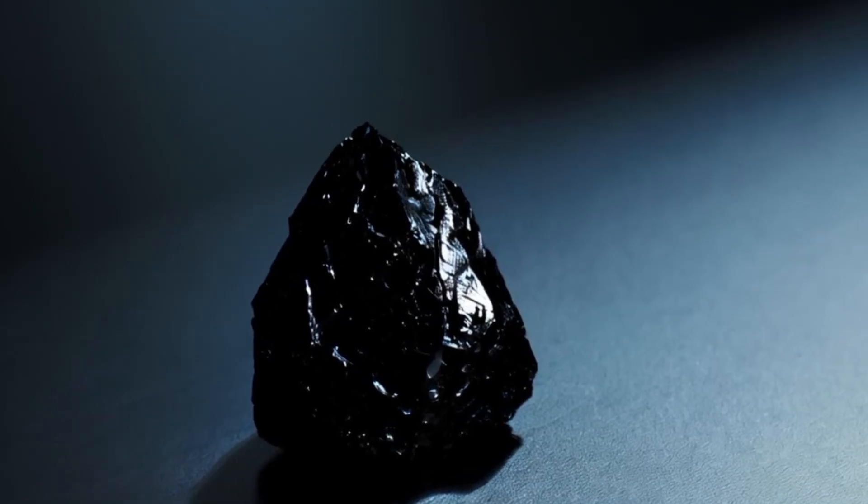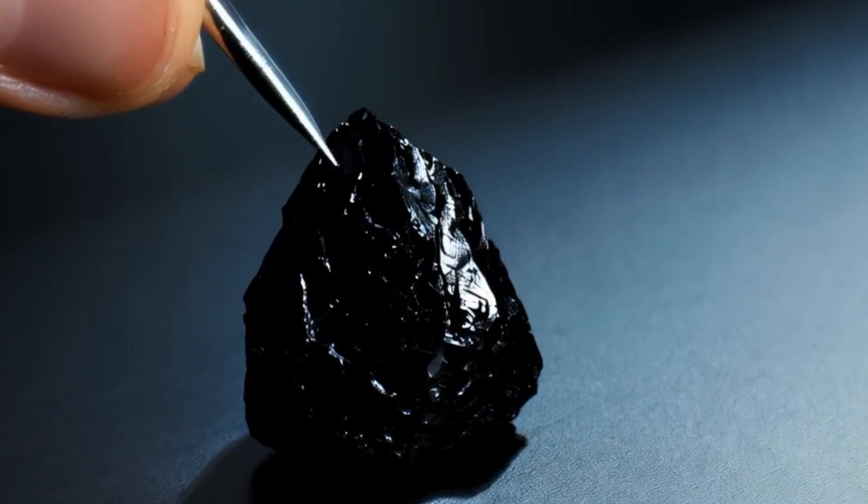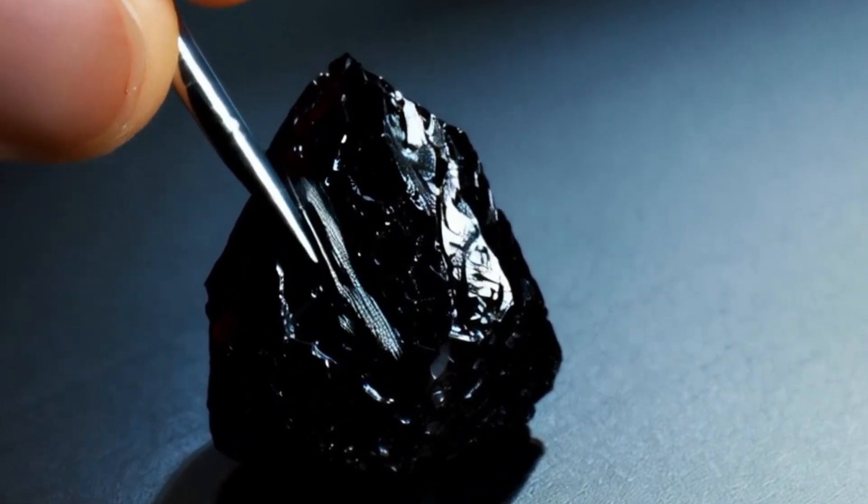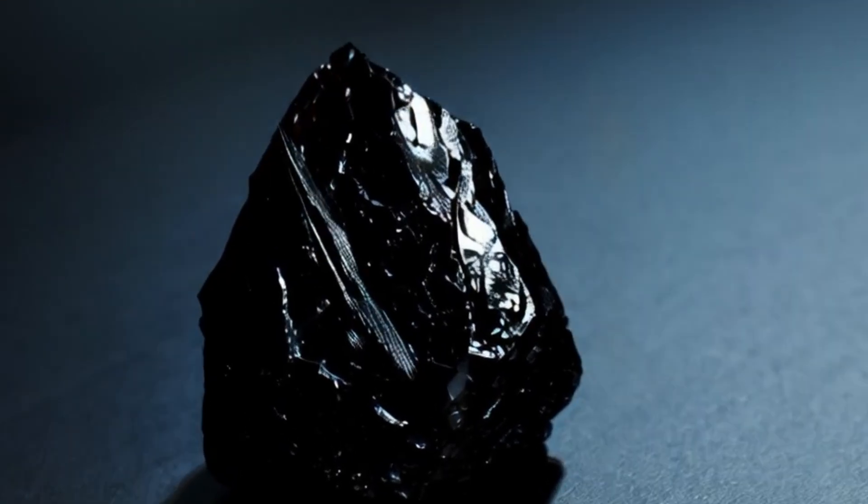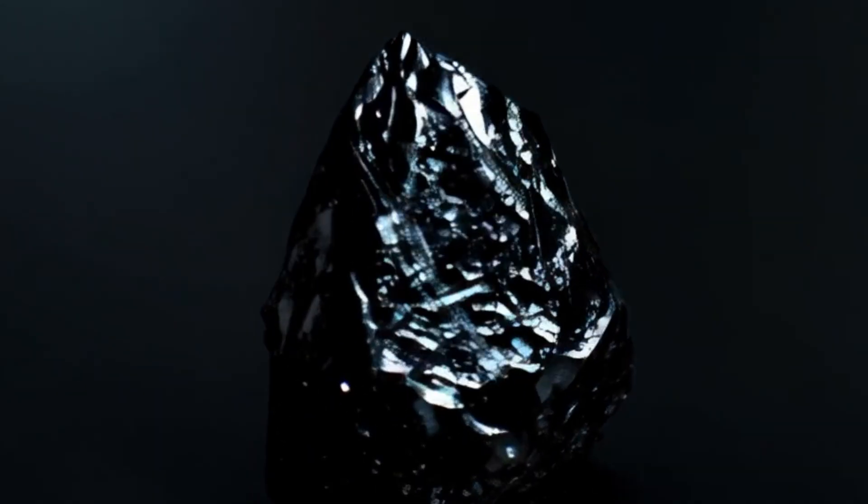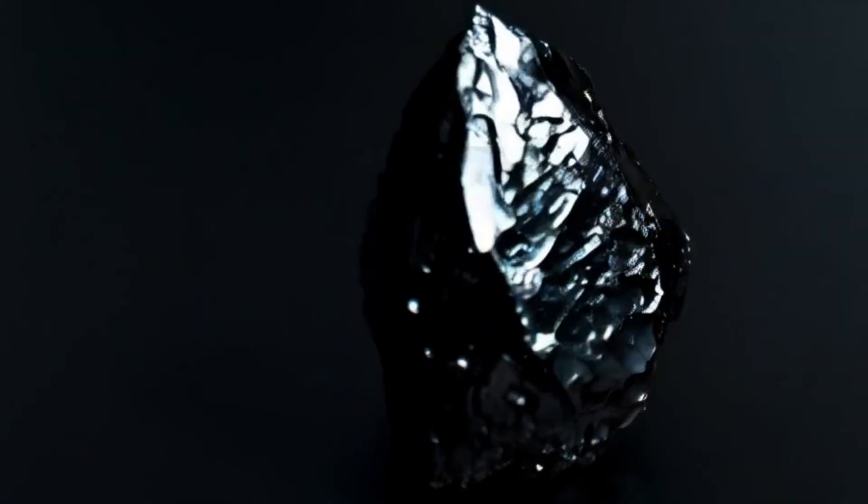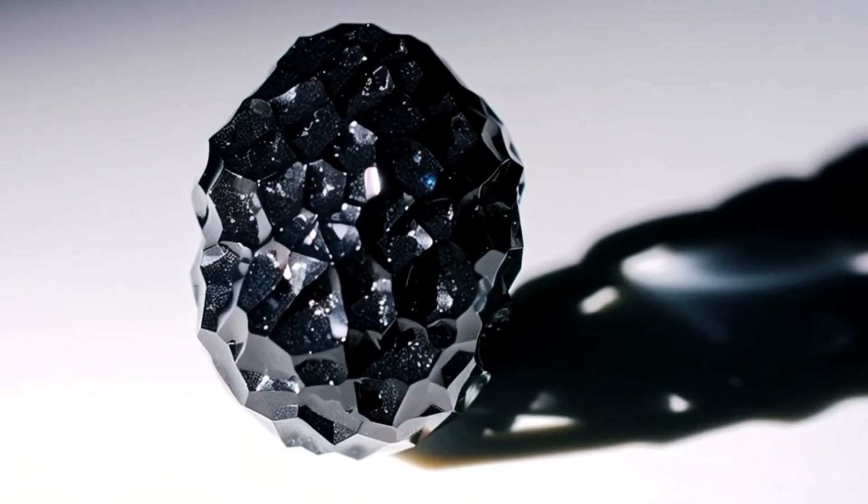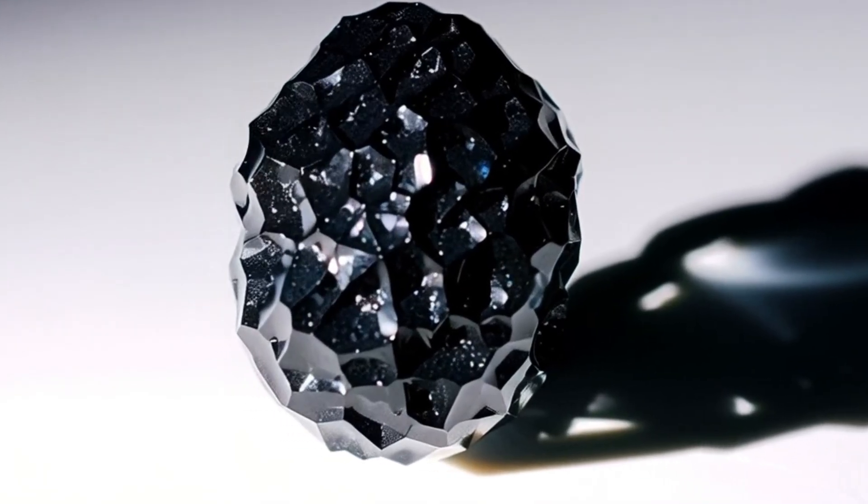If you've found a black stone and wonder whether it's a real black diamond, here are some simple ways to test it at home. Visual Inspection: Start by carefully observing the stone under bright light. Real carbonado diamonds usually have a dark charcoal or deep black color with a metallic or slightly shiny surface.